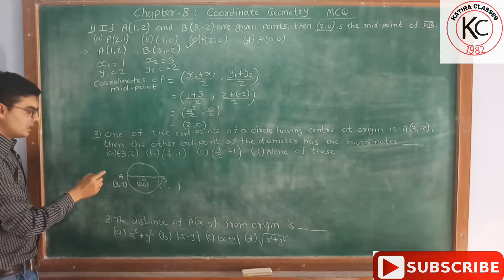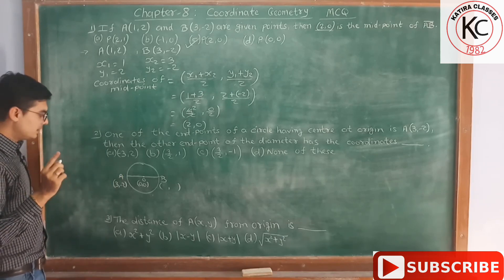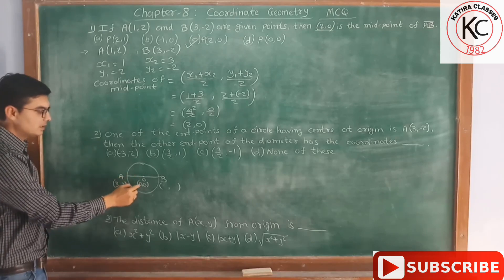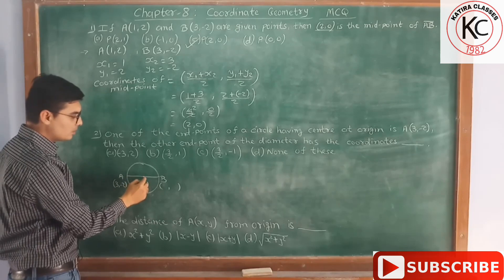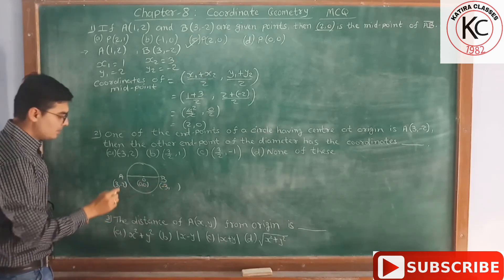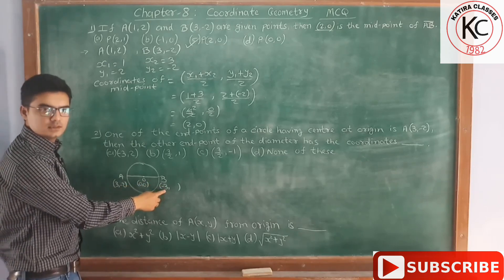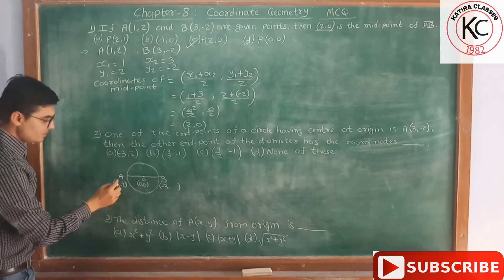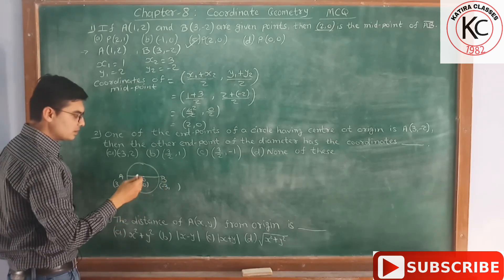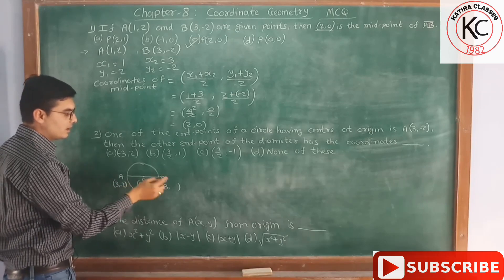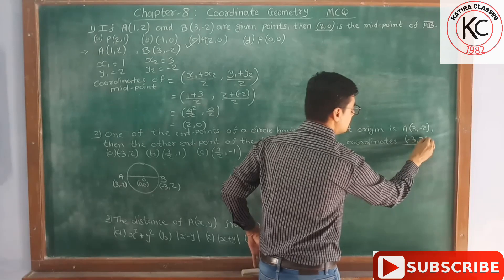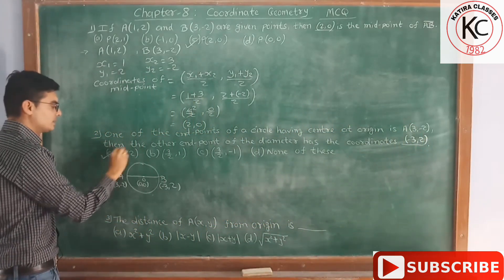Now if we start from A, the x-coordinate which is 3 becomes 0 at the origin, so it is decreasing from 3 to 0. If we travel from O to B, it will go on decreasing, so it will become minus 3. In the same way for the y-coordinate, from minus 2 it becomes 0 at the origin, and then from 0 it goes on increasing to plus 2. So the coordinates of point B are (−3, 2), and the correct answer is option A.